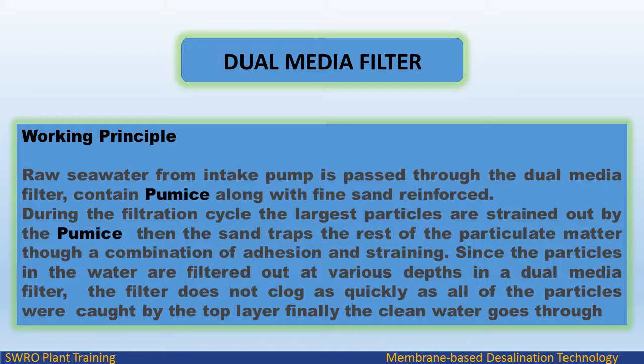Raw seawater from the intake pump is passed through the dual media filter, which contains pumice along with fine sand. During the filtration cycle, the largest particles are strained out by the pumice, then the sand traps the rest of the particulate matter through a combination of adhesion and straining. Since particles are filtered at various depths in a dual media filter, the filter does not clog as quickly as if all particles were caught by the top layer. Finally, the clean water passes through.